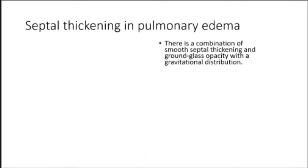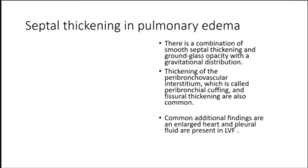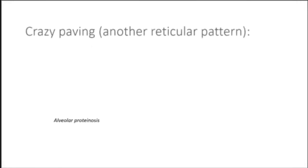Common additional findings in pulmonary edema are an enlarged heart and pleural fluid. Another reticular pattern is crazy paving, which combines septal thickening and ground glass opacity in a patchy distribution where some lobules are affected and others are not.